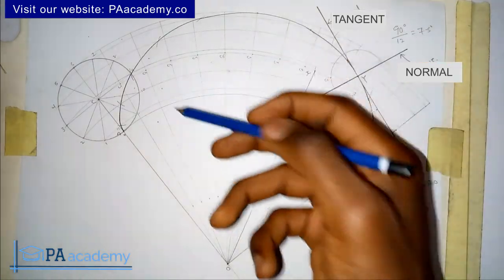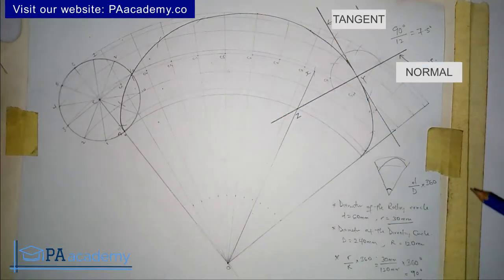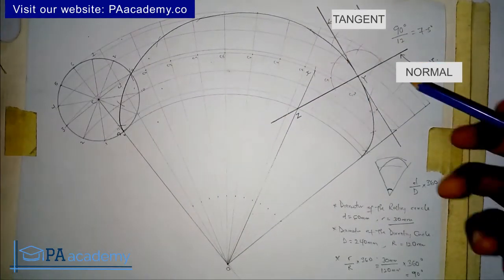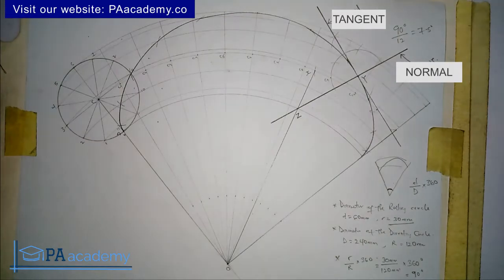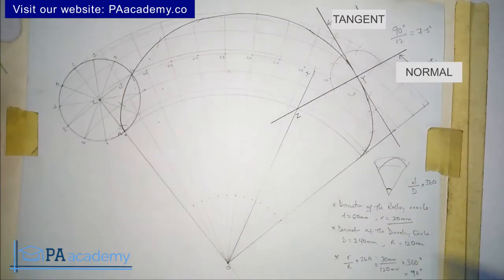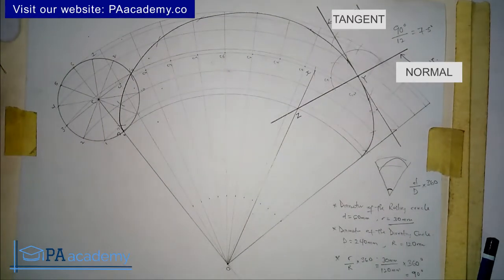So we now have both the tangent and the normal from point Y. Whatever point you are given, just follow these steps and you will get your tangent and your normal.